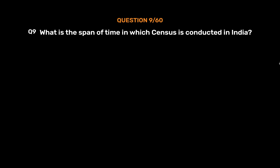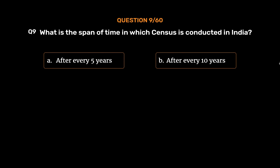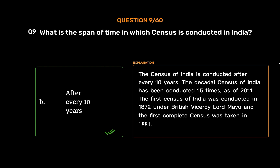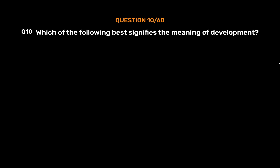Question number 9: What is the span of time in which the census is conducted in India? Option A: after every five years, option B: after every 10 years, option C: after every 11 years, option D: after every seven years. The correct answer is option B, after every 10 years. The decadal census of India has been conducted 15 times as of 2011. The first census of India was conducted in 1872 under British Viceroy Lord Mayo, and the first complete census was taken in 1881.